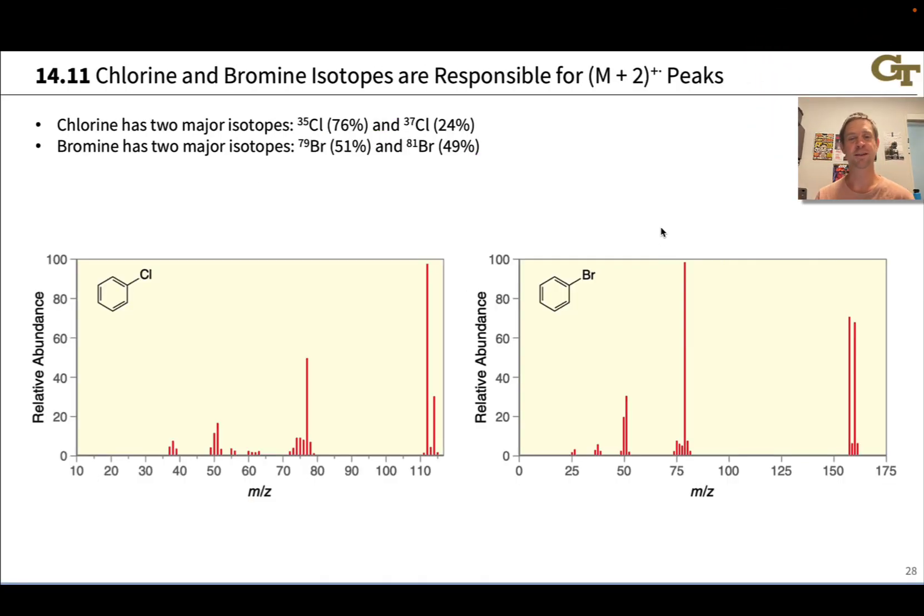M+2 peaks are also observable in many mass spectra, and these are due typically to chlorine and bromine atoms which have two isotopes in relatively close abundance that differ in two mass units. Chlorine has chlorine-35 and chlorine-37 in a ratio of about three to one respectively.